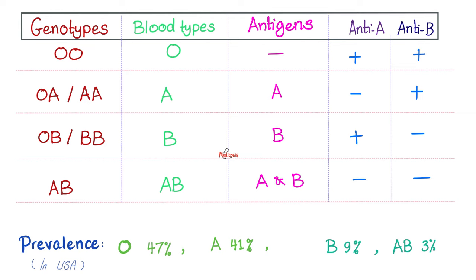Whether your genotype is AO or AA, A is dominant — so your blood group is A. You have the A antigen, so you've seen it before — no need to make antibodies against it. Have you seen B? No — you're ready to destroy B, B is foreign to you. For genotype BO, phenotype is B because B dominates. You have the B antigen and the anti-A antibody.